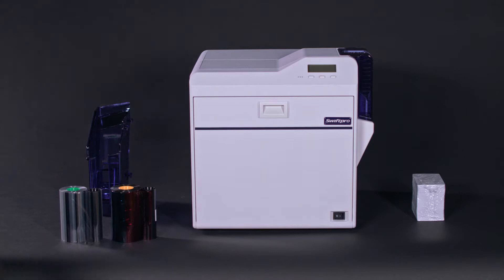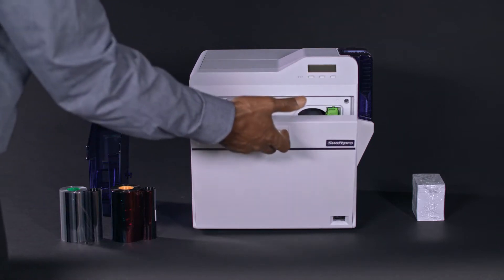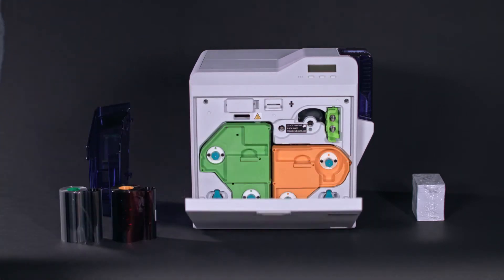First we'll install the ribbon and the film. Open the front cover. Pull the orange ribbon cassette out.